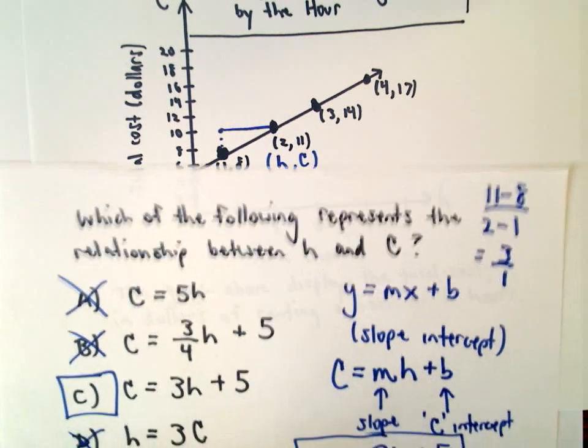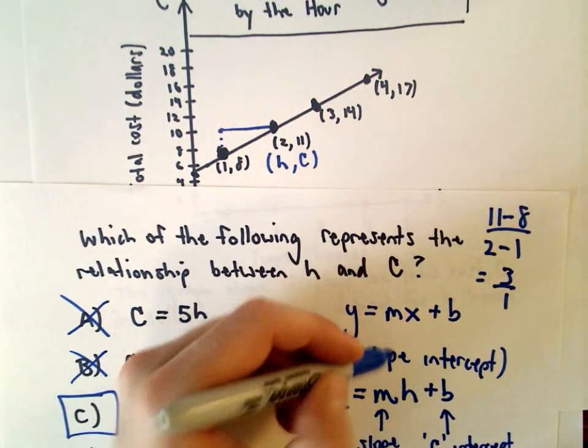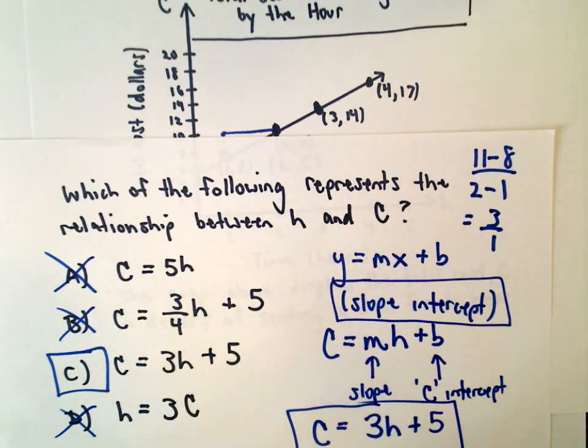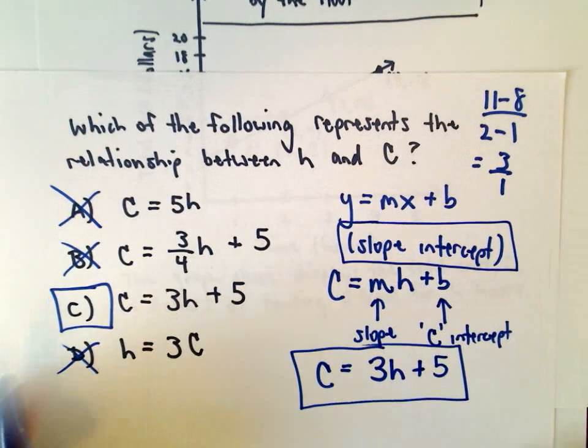You could go through and do elimination and get rid of B and D as well by doing that. But again, you're just doing the slope intercept method, finding the equation of a line. It's just switching out: instead of x and y, you've got H and C. That's the only kind of difference here.